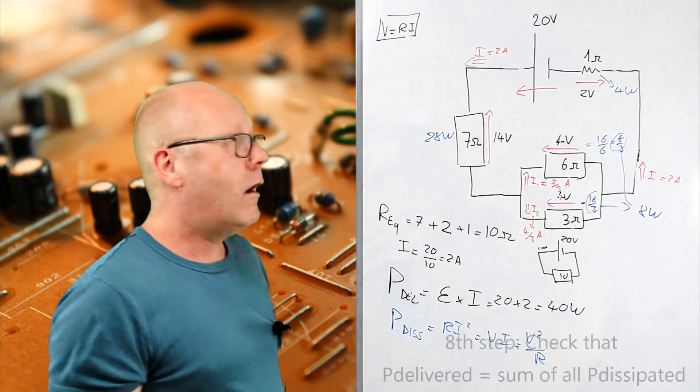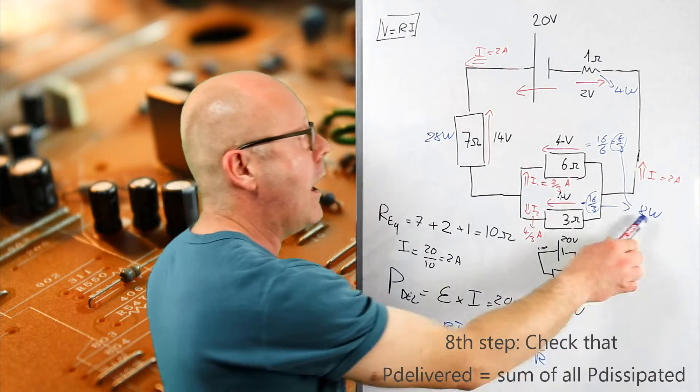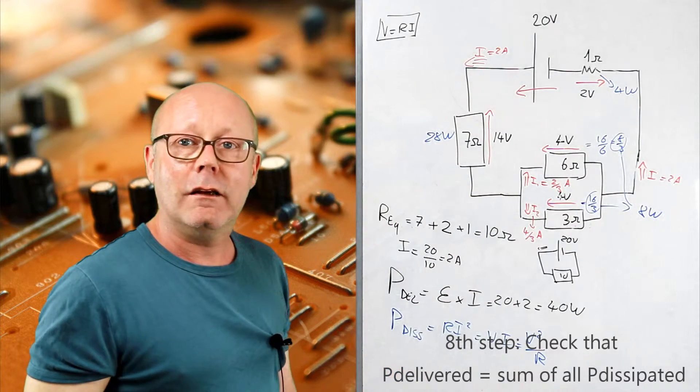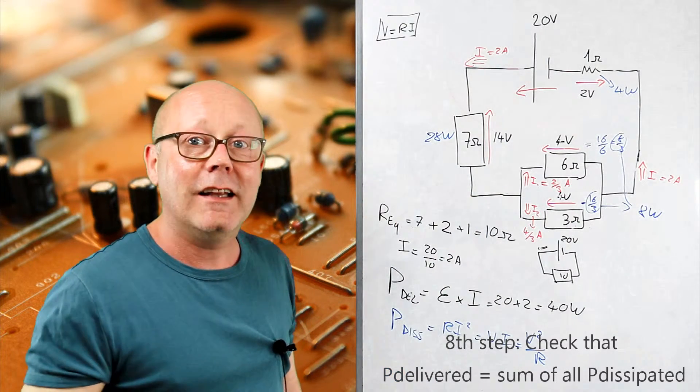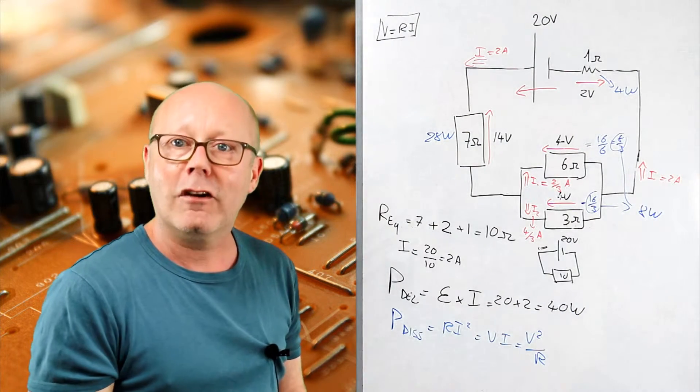So let's check if all the power dissipated by the circuit corresponds to the power delivered. 8 plus 4 is 12, plus 28 is 40. So the total of my power dissipated is 40 watts, which is equal to the power delivered by the circuit.